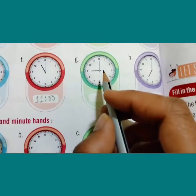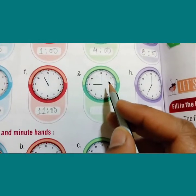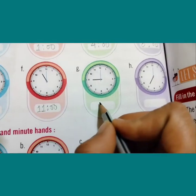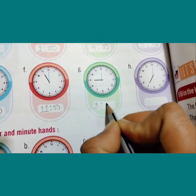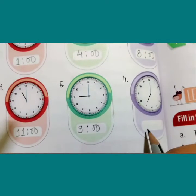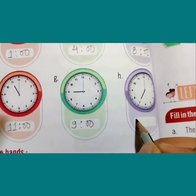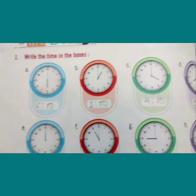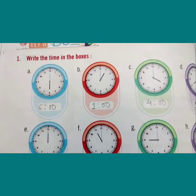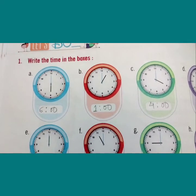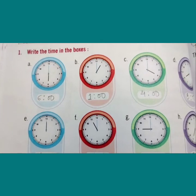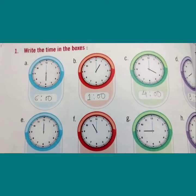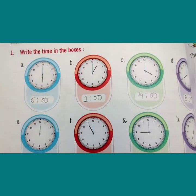Next is part G: the hour hand is at 12 and the minute hand is at 9, so the time is 9 o'clock. Part H: the hour hand is at 12 and the minute hand is at 7, so the time is 7 o'clock. These examples are related to Chapter 9 — Time. The question asks what time is shown on the watches in the boxes. We will continue with question 2 in the next class. Goodbye, have a good day!